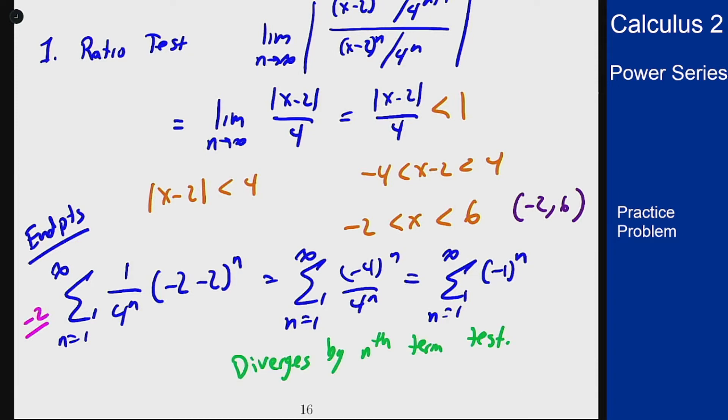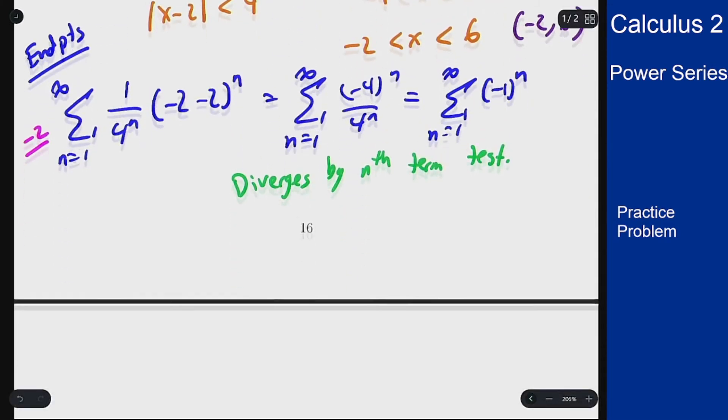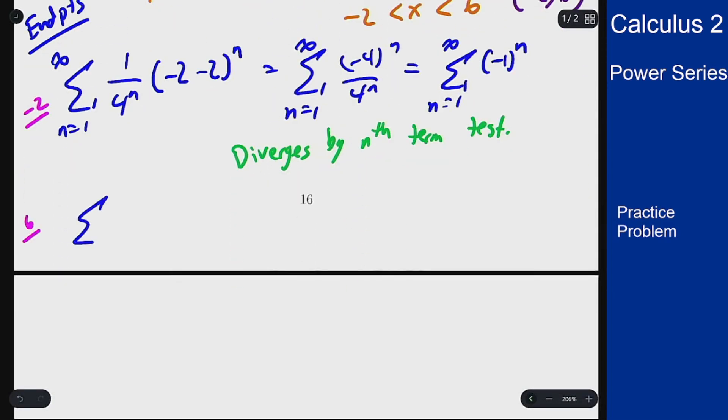We can check the same thing at the other endpoint, x = 6. In that case, I get the sum from n=1 to infinity of (1/4^n)(6-2)^n, which is the sum from n=1 to infinity of 4^n / 4^n, which is the sum of 1. This also diverges by the same reasoning.